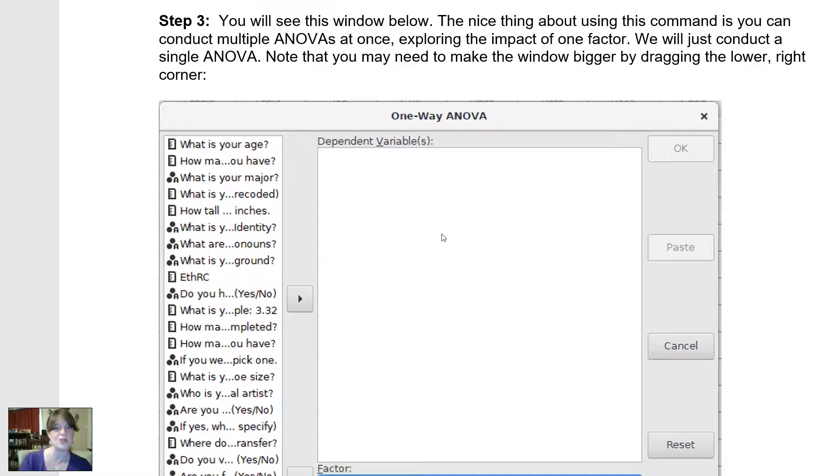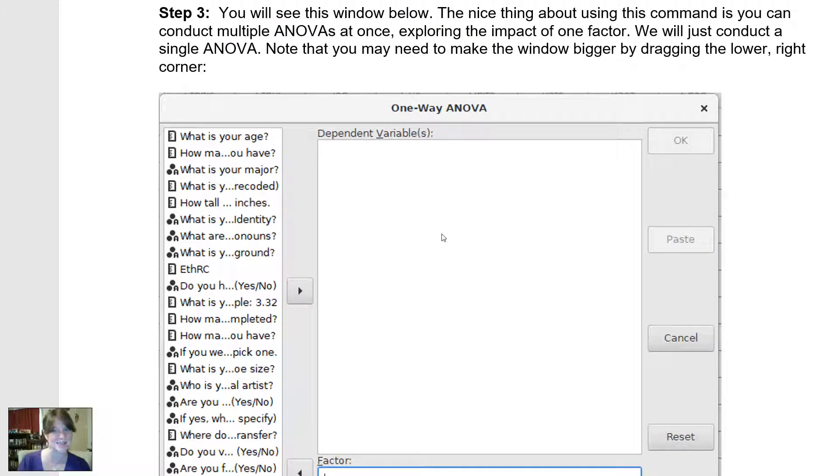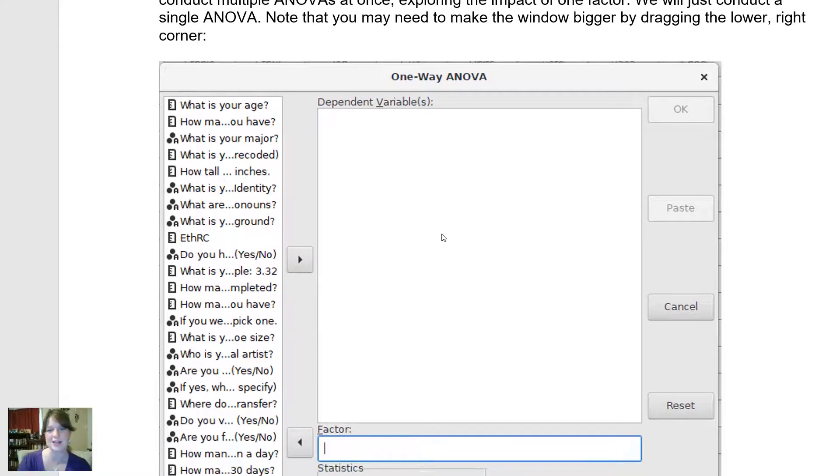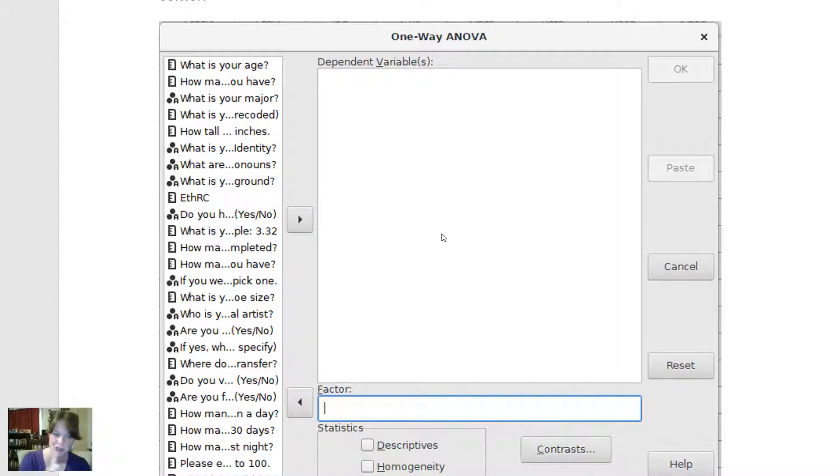And then you will see a box that looks like this. The nice thing about this command is it actually allows you to do several different one-way ANOVAs at once, all exploring the same factor. But we're just going to do one. We're going to do one ANOVA. And here you have all your different variables on the left, all the things you asked people or all the things somebody asked people. And you could right-click on this to change how you view these variable names.